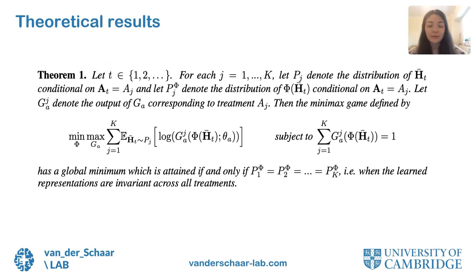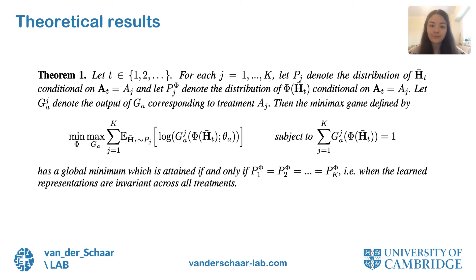To train such a model using backpropagation, we use a gradient reversal layer which flips the gradient before the treatment classifier such that we maximize the treatment loss. We also provide a theoretical result showing that the treatment loss part of our objective removes the time-dependent confounding bias and builds a representation that is invariant across domains. A good representation allows us to obtain low error in estimating counterfactuals for all treatments while minimizing the H-divergence between induced marginal distributions of all domains.